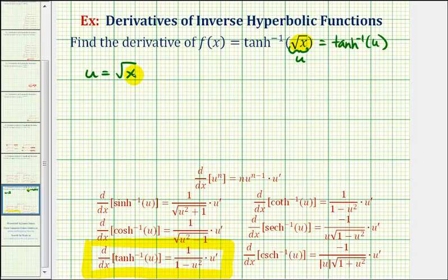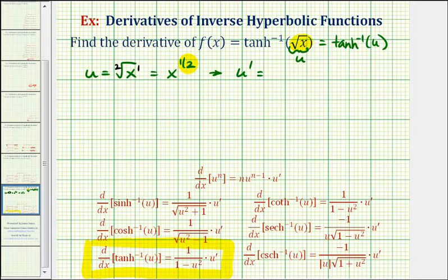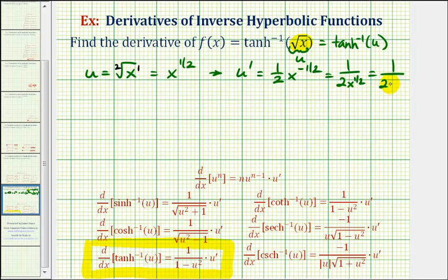We'll also have to find u prime, which is the derivative of the inner function. Let's first write this using rational exponents. The exponent on x is one and the index is two, so we can write this as x to the one half. We can now find u prime, the derivative of x to the one half with respect to x. Applying the power rule, we multiply by one half and subtract one from the exponent. One half minus one is negative one half, which we can write as one over two x to the one half, or one over two square root x.